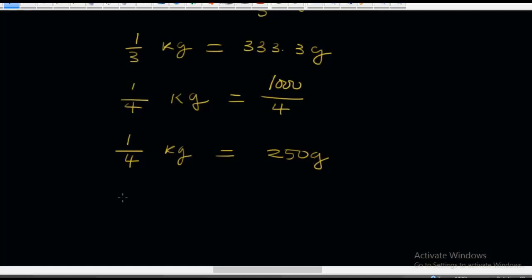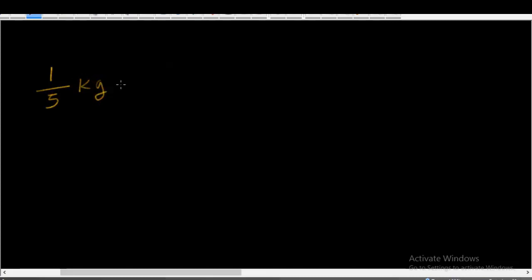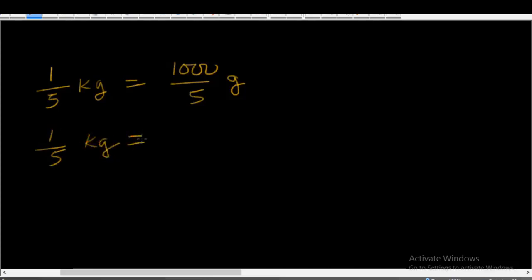What if we divide by 5? In the same way, 1 over 5 kg is the same thing as writing 1,000 over 5 grams. So 1 over 5 kg is equal to — if you divide 1,000 by 5 — you're going to get 200 grams. 1 over 5 kg is the same thing as 200 grams.